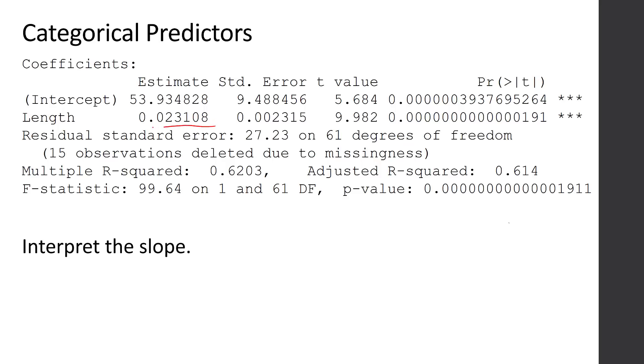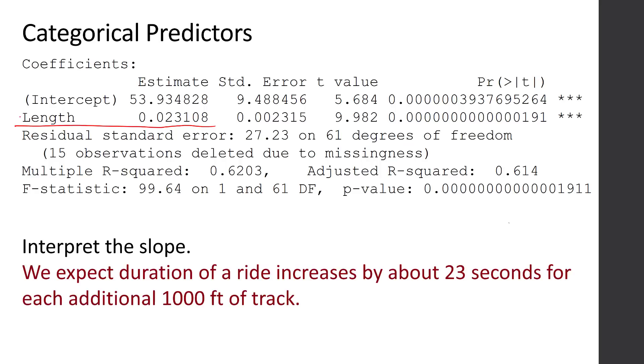Let's go ahead and take a stab at interpreting the slope. The slope is 0.023. That says for each one foot of track, we expect the duration of the ride to be 0.023 seconds longer. What I've done here is I've multiplied everything by a thousand. We expect duration of a ride to increase by about 23 seconds for each additional thousand feet of track. That should be old news.